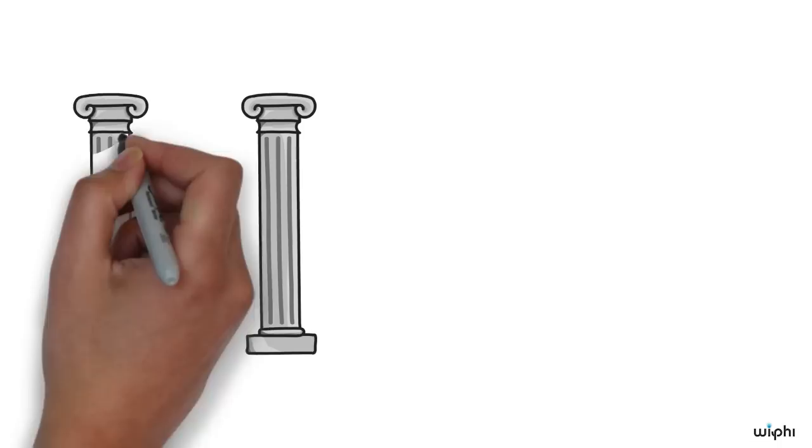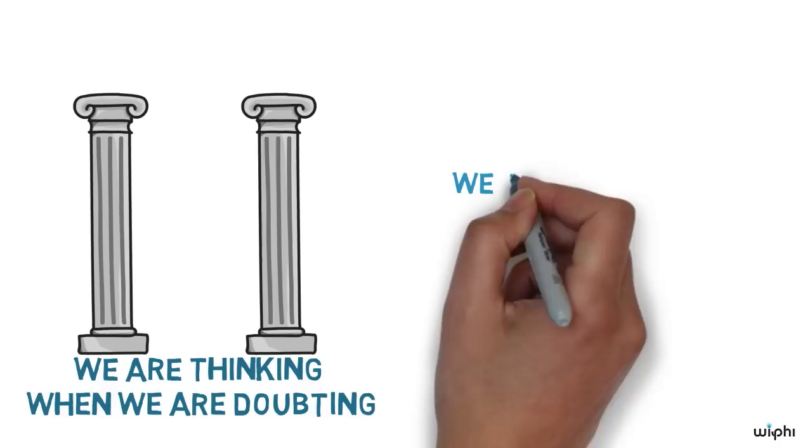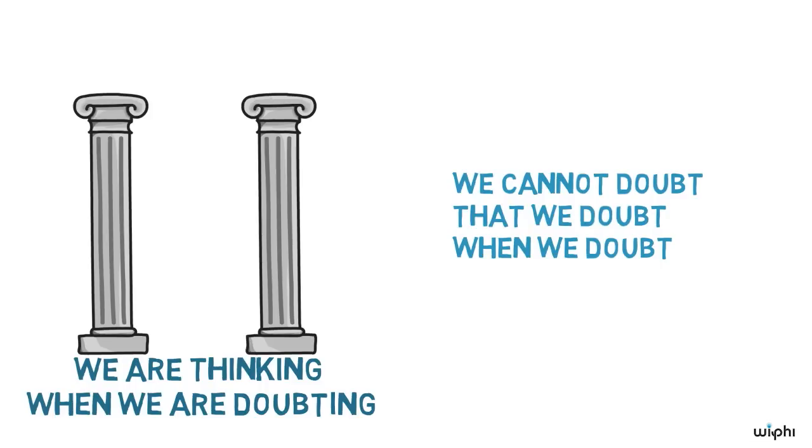After all, the Cogito argument is an argument, that is a transition or an inference from one belief to another. The unshakable belief that this argument starts out from is the belief that we are thinking when we are doubting. And we arrive at this certainty just by observing that whatever we might doubt, we cannot doubt that we doubt when we doubt.